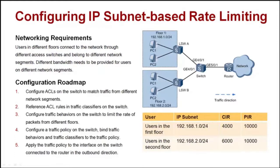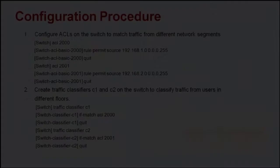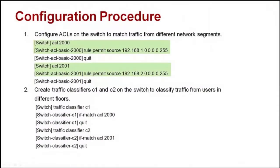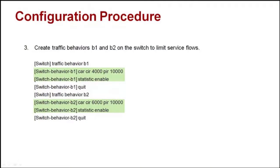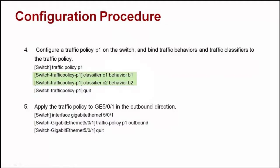Let's see the configuration roadmap and procedure. There are five steps in total. Step one: configure ACLs to match traffic from different network segments, where ACL rules are defined based on source IP addresses. Step two: create traffic classifiers to classify traffic from users in different floors. Step three: configure traffic behaviors to limit the rate of packets from different network segments, configure the CIR and PIR, and configure traffic statistics. Step four: configure a traffic policy and bind the traffic classifiers and traffic behaviors to the traffic policy. Step five: apply the traffic policy to the interface on the switch connected to the enterprise in the outbound direction.